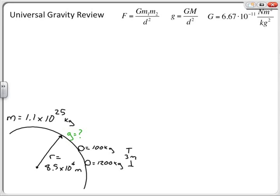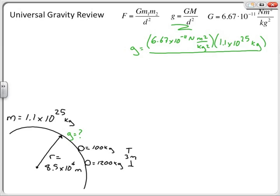To find little g, I'll use the second equation. Typically we use 9.8 meters per second squared for Earth, but here we're calculating it for this planet. Little g equals big G — 6.67 times 10 to the minus 11 newton meters squared per kilogram squared — multiplied by the mass of the planet, 1.1 times 10 to the 25 kilograms, divided by the distance of separation from the location of interest to the center of mass of the planet. That distance is the radius: 8.5 times 10 to the 6 meters, squared.